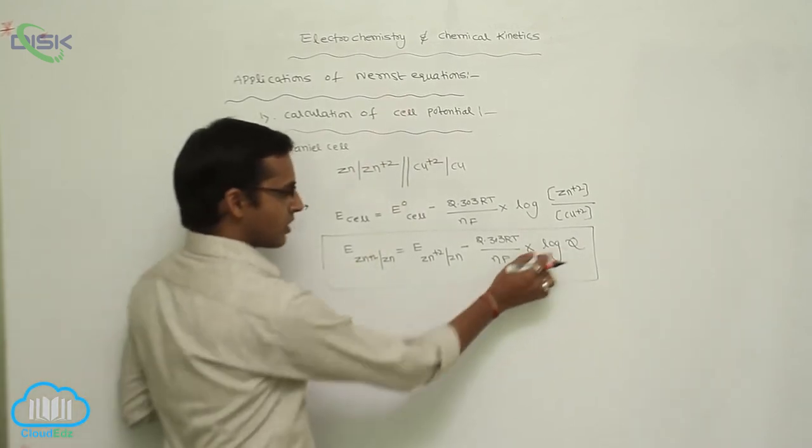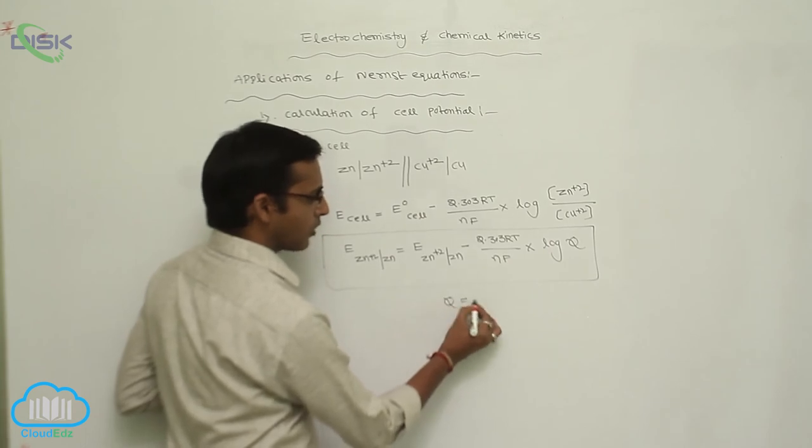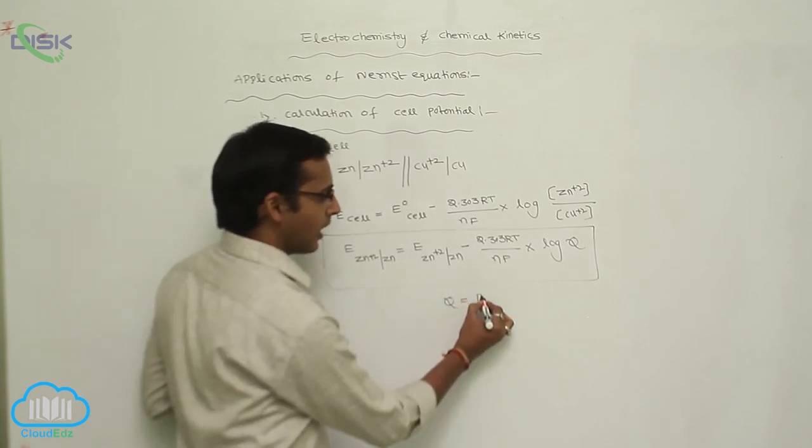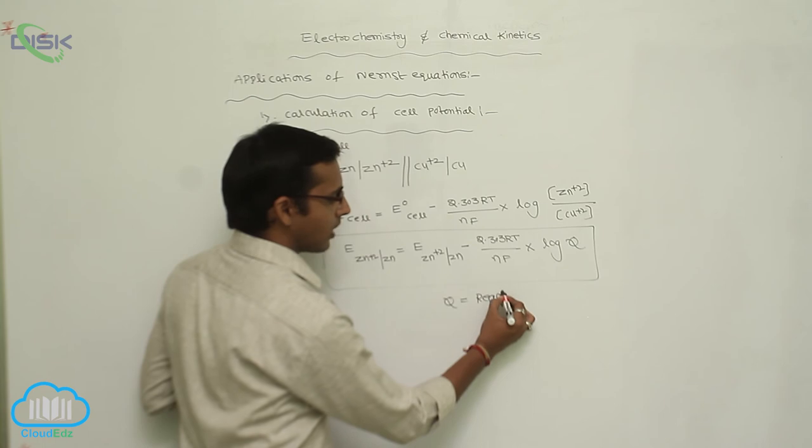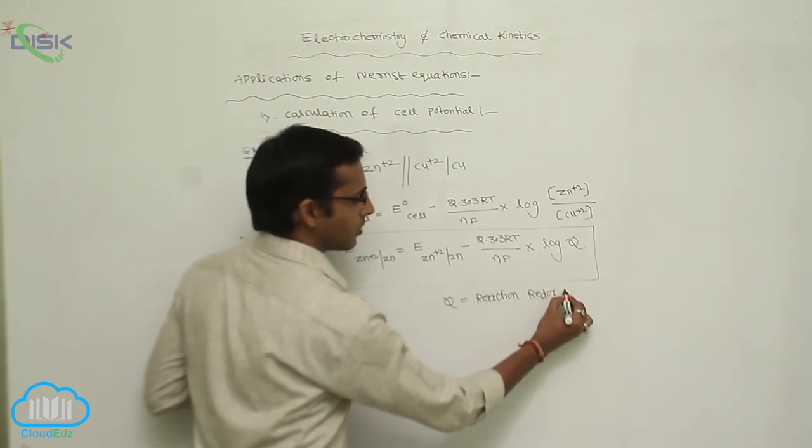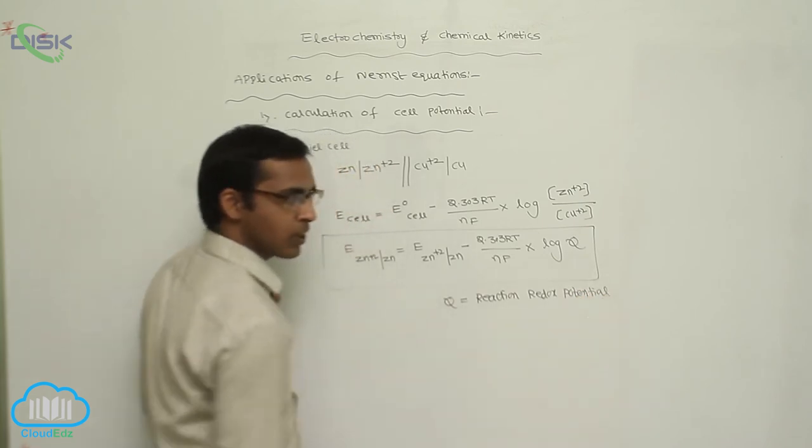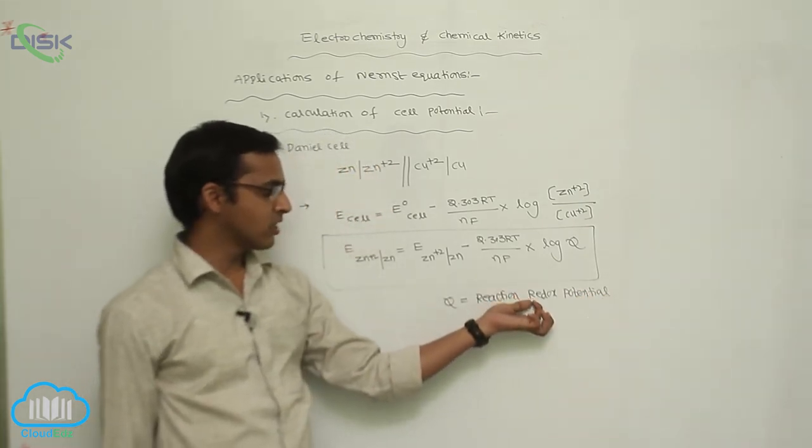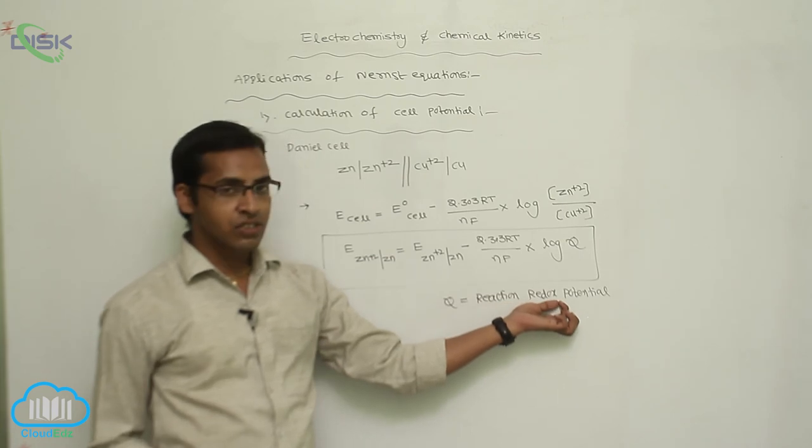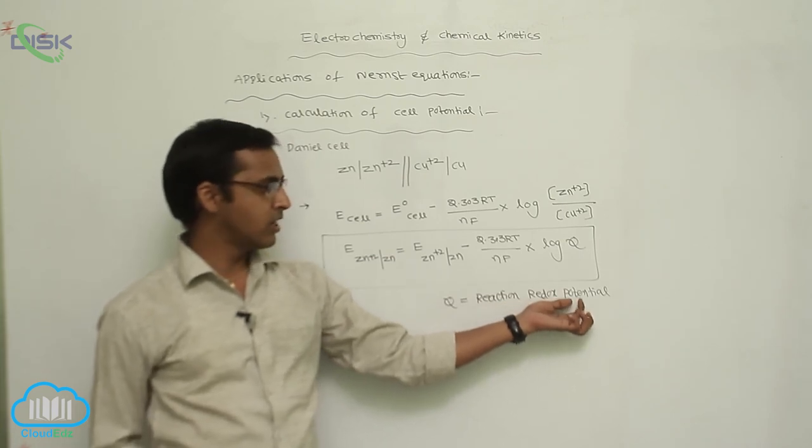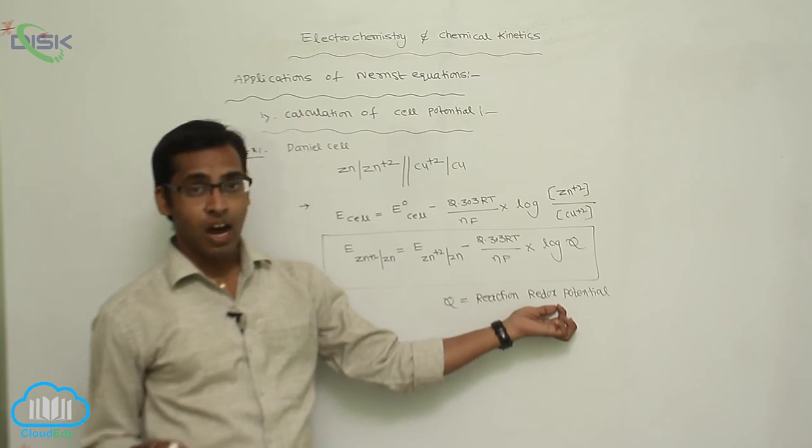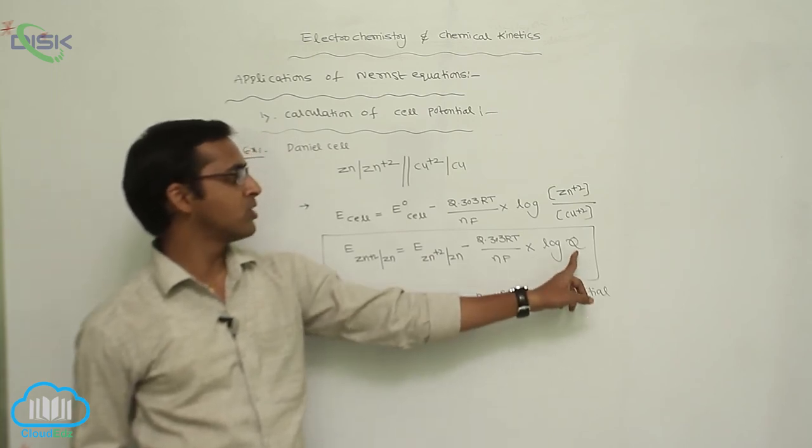In this equation, Q is nothing but reaction redox potential. Redox potential means here we consider reduction reaction and oxidation reaction, the difference between the reduction potential value and oxidation potential value, that is Q.